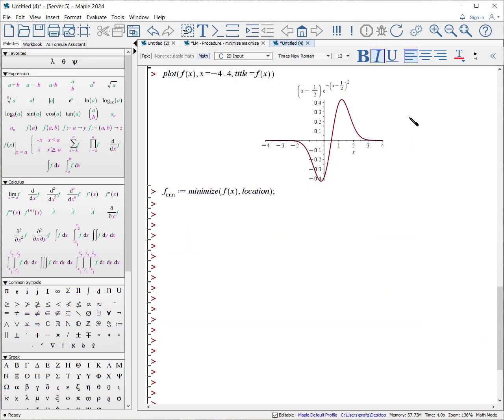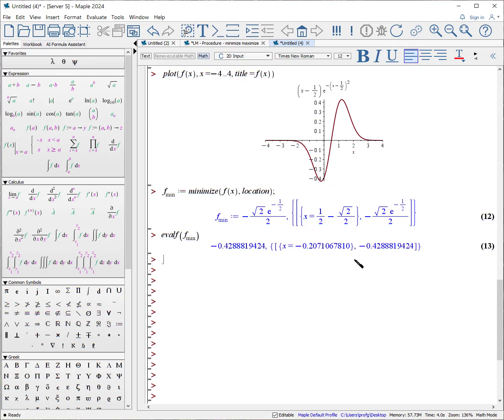Let's return to this example here, where we have both a minimum and a maximum, and let's calculate the value of it and its location. And there's our answer precisely. Let's get a floating point evaluation of this, eval f of f_min, and you can see this is the value at x equals minus 0.2.